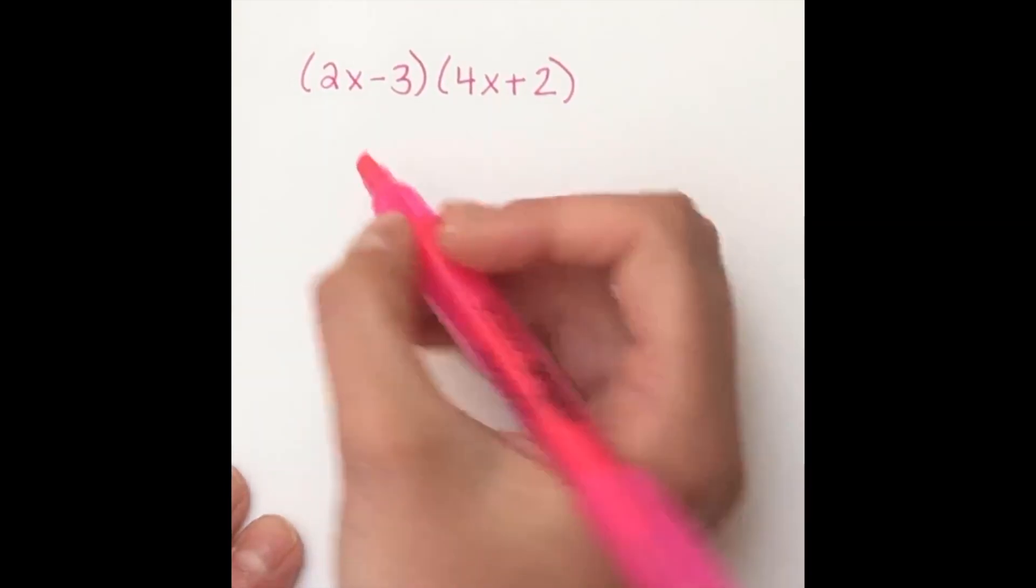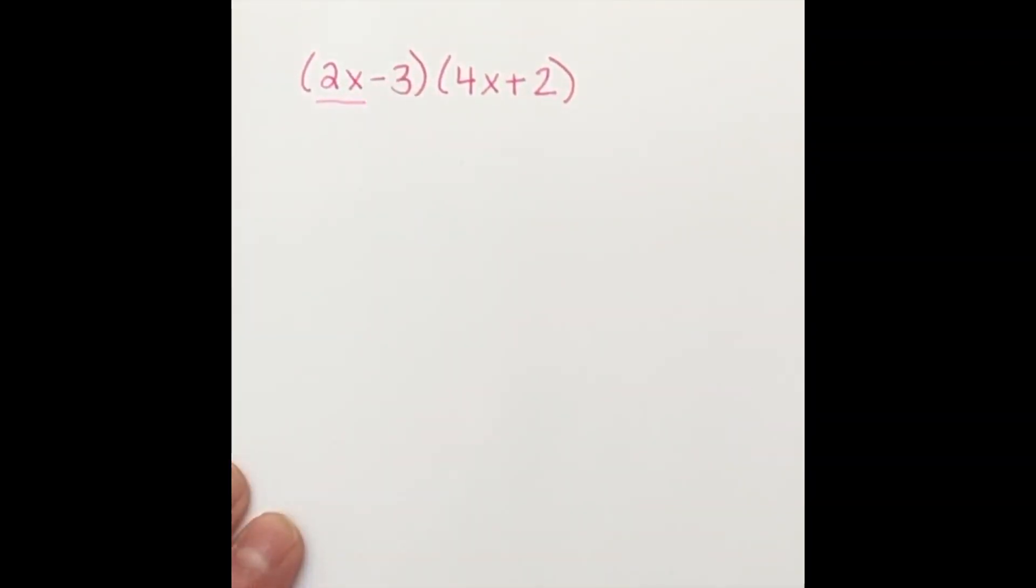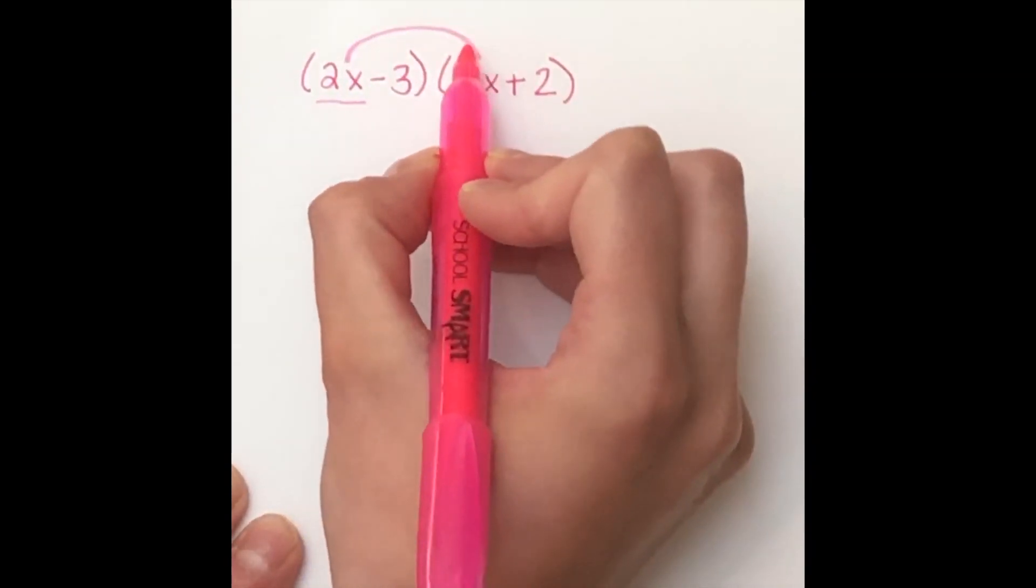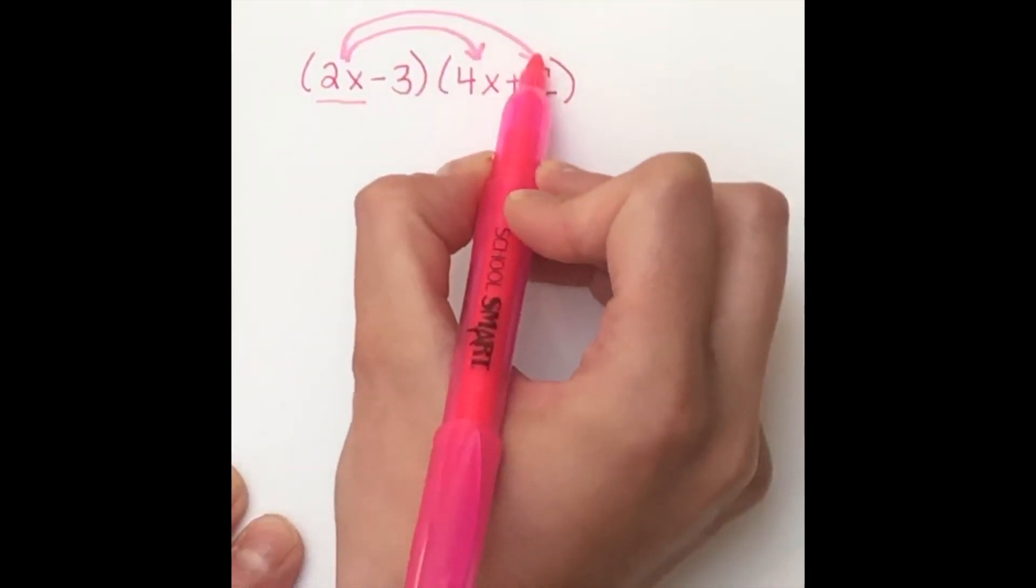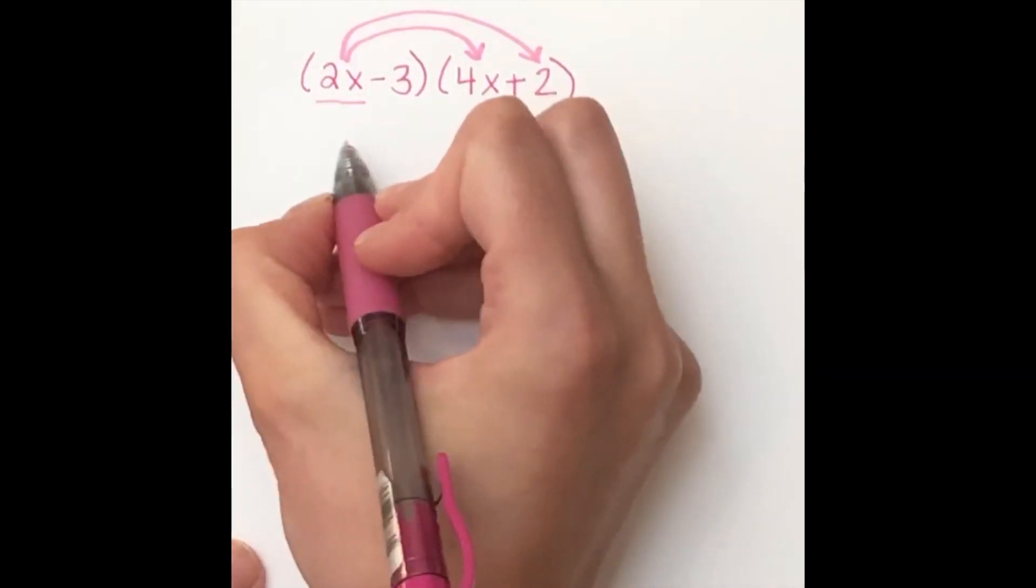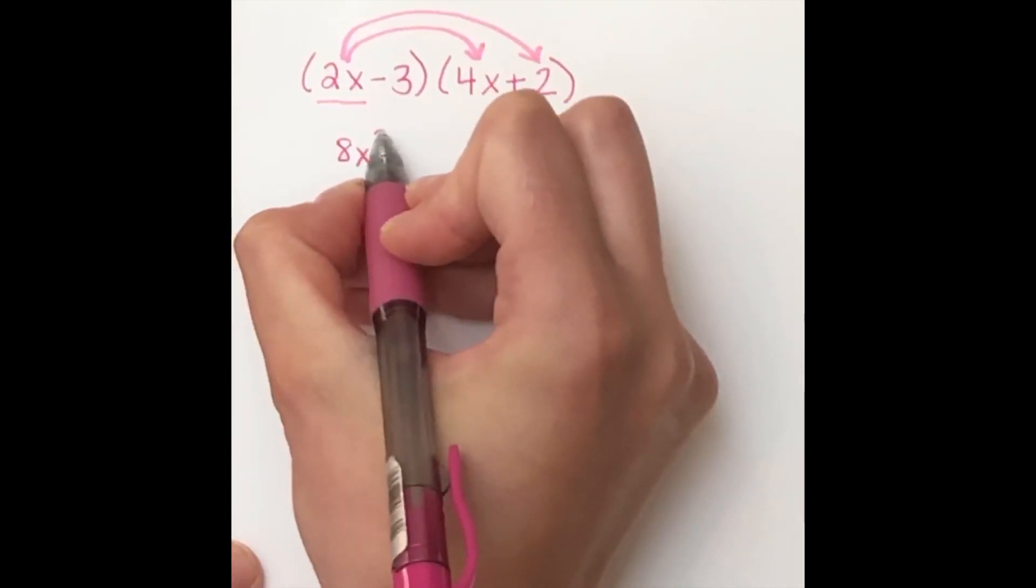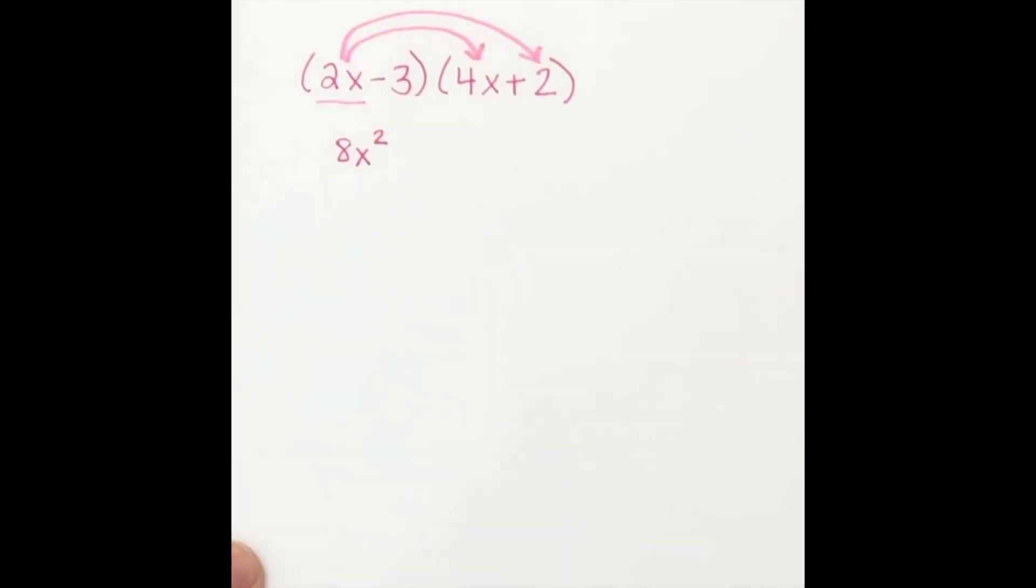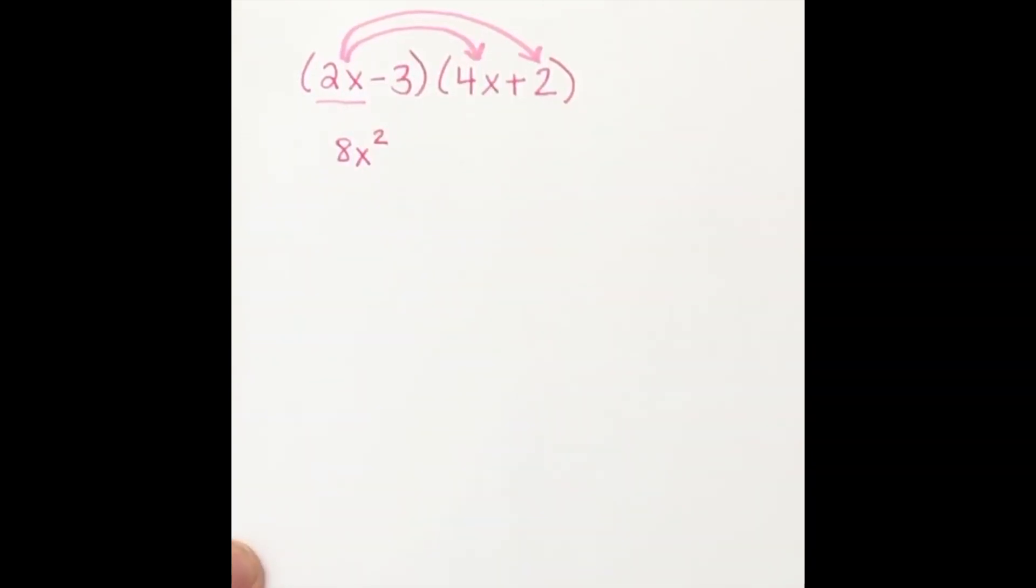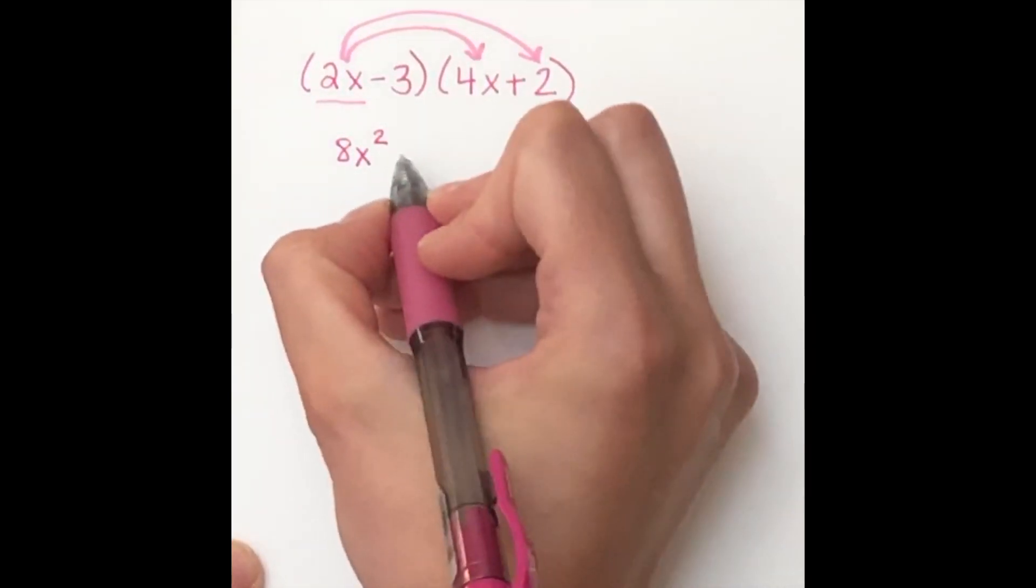So I'm going to start with the 2x. And with that 2x, I'm going to distribute it to both the 4x and the 2, making sure that I'm doing it to both terms. 2x times 4x is 8x squared, remembering our laws of exponents. 2x times 2 is positive 4x.